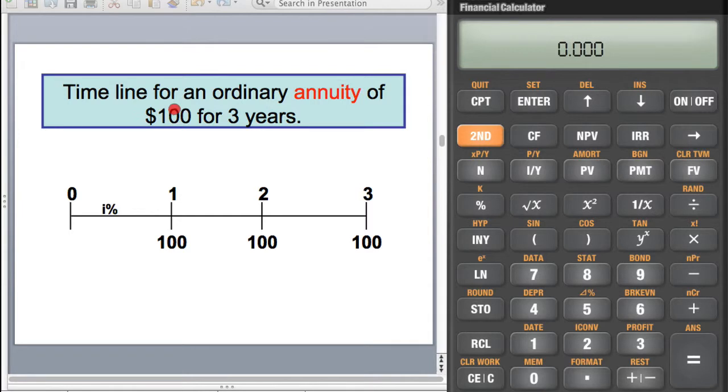Here's a timeline for an ordinary annuity of $100 for three years, which means the equal amount of $100 at the end of each year over a three-year period.